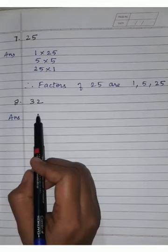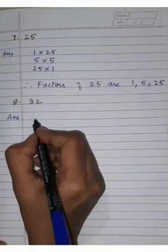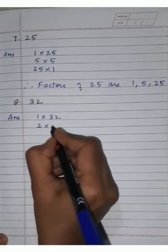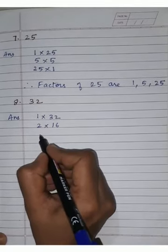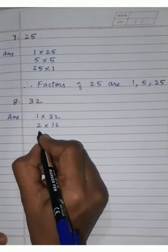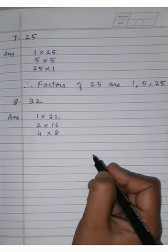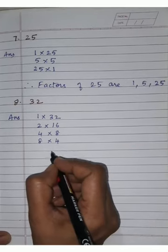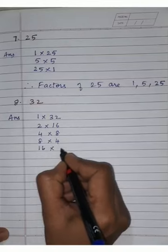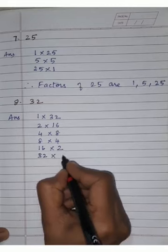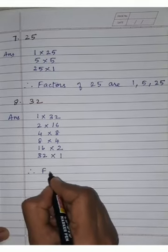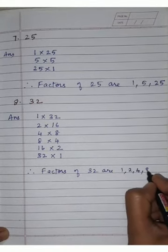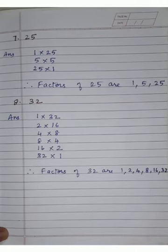Our eighth sub-question is to find the factors of 32. In the 1 times table: 1 × 32 = 32. In the 2 times table: 2 × 16 = 32. Three table is not coming. 4 × 8 = 32. Five, six, and seven tables are not coming. 8 × 4 = 32. Nine, ten, and eleven tables are not coming. 16 × 2 = 32. Then 32 × 1 = 32. Therefore, factors of 32 are 1, 2, 4, 8, 16, 32.